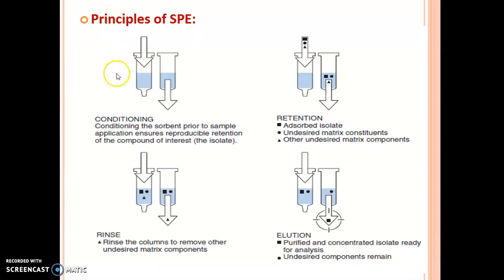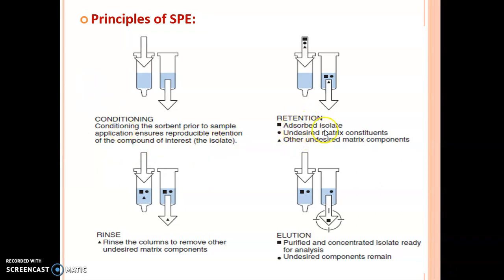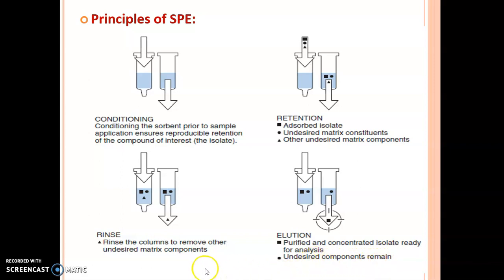The solid phase extraction method involves four steps: conditioning, retention, rinsing, and elution. In the conditioning step, the sorbent is conditioned prior to sample application to ensure reproducible retention of the compound of interest. In the retention step, the adsorbed isolate is obtained and undesired matrix constituents are separated. Then rinsing removes other undesired matrix components. In the elution step, a purified and concentrated isolate is ready for analysis, while undesired components remain behind.